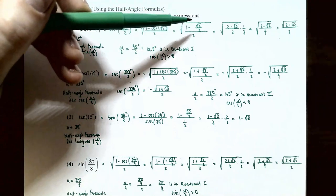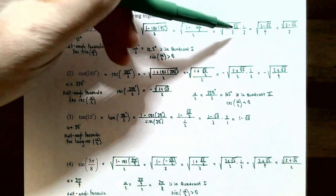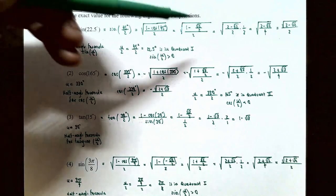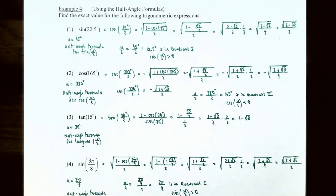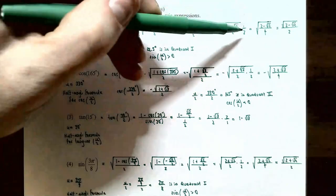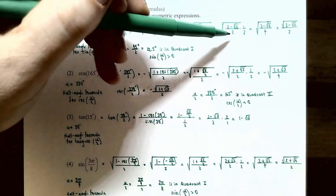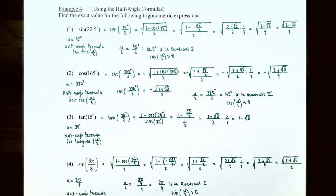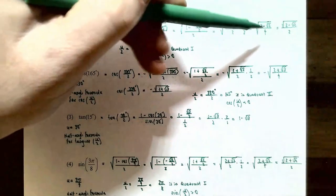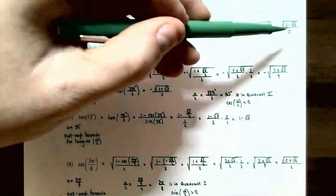With the fraction (1 − √2/2) / 2 inside the square root, we find a common denominator: 1 = 2/2, so the numerator becomes (2 − √2) / 2. Dividing by 2 means multiplying by 1/2, giving (2 − √2) / 4 inside the square root. Taking the square root of numerator and denominator separately: √(2 − √2) over √4 = 2. So sin(22.5°) = √(2 − √2) / 2.